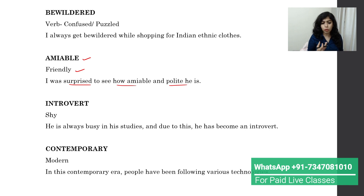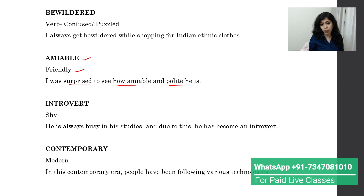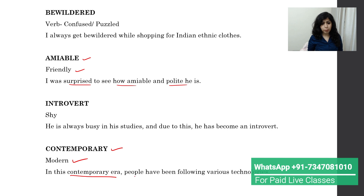Next is 'introvert' — we use it for people who are shy. For example: 'He is always busy in his studies, and due to this he has become an introvert.' Introvert means shy. Then we have 'contemporary,' which means modern. For example: 'In this contemporary era, people have been following various technologies.'